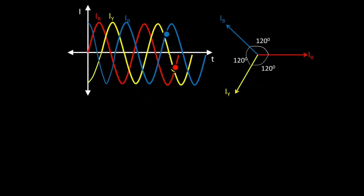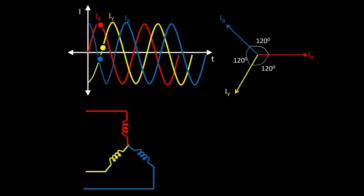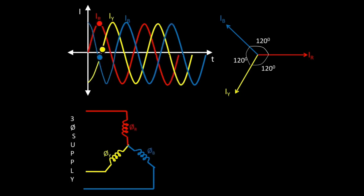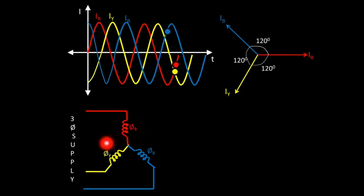Now if we pass this three-phase current through a three-phase winding — to flow the three-phase current we have to take three windings, which can be connected in star or in delta — and we supply three-phase supply to the three-phase winding, then naturally each current will produce its own flux. So φR is the flux produced by R phase, φY is the flux produced by Y phase, and φB is the flux produced by B phase.